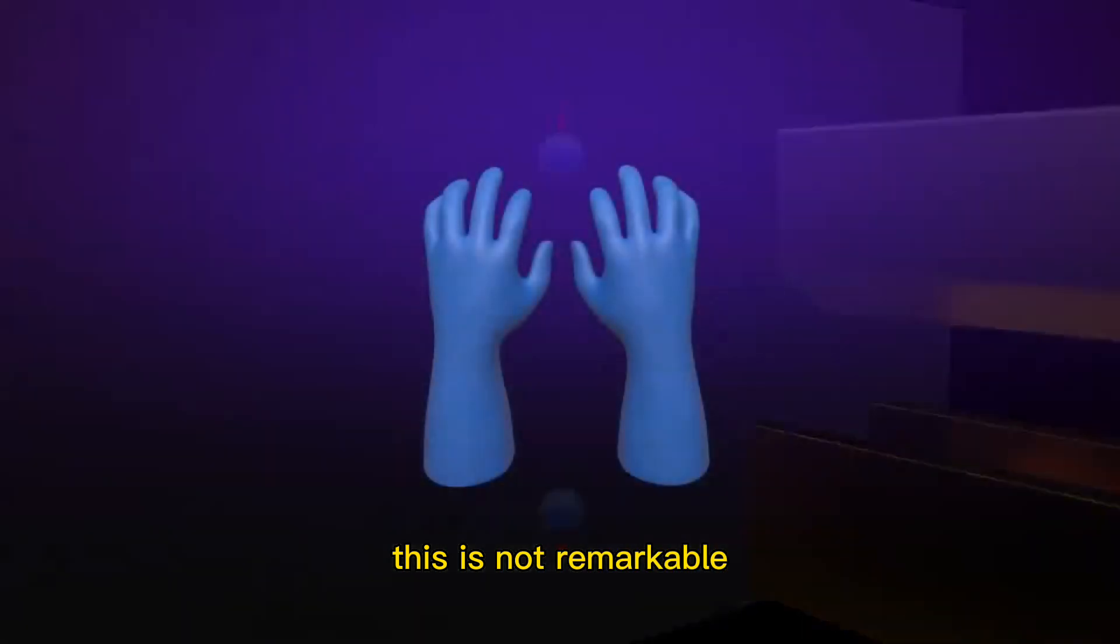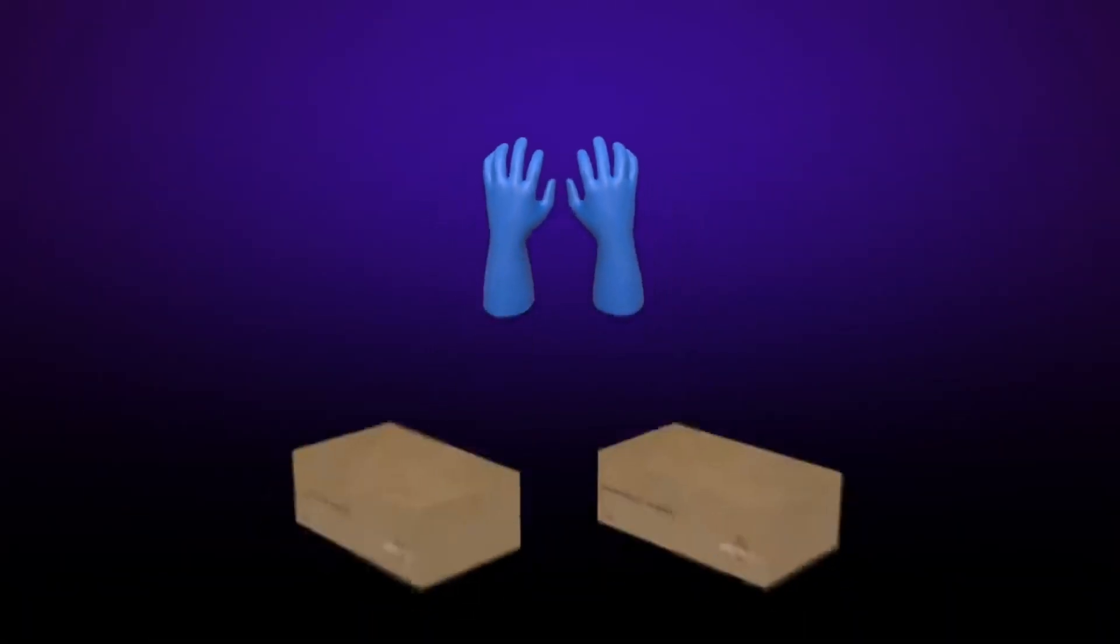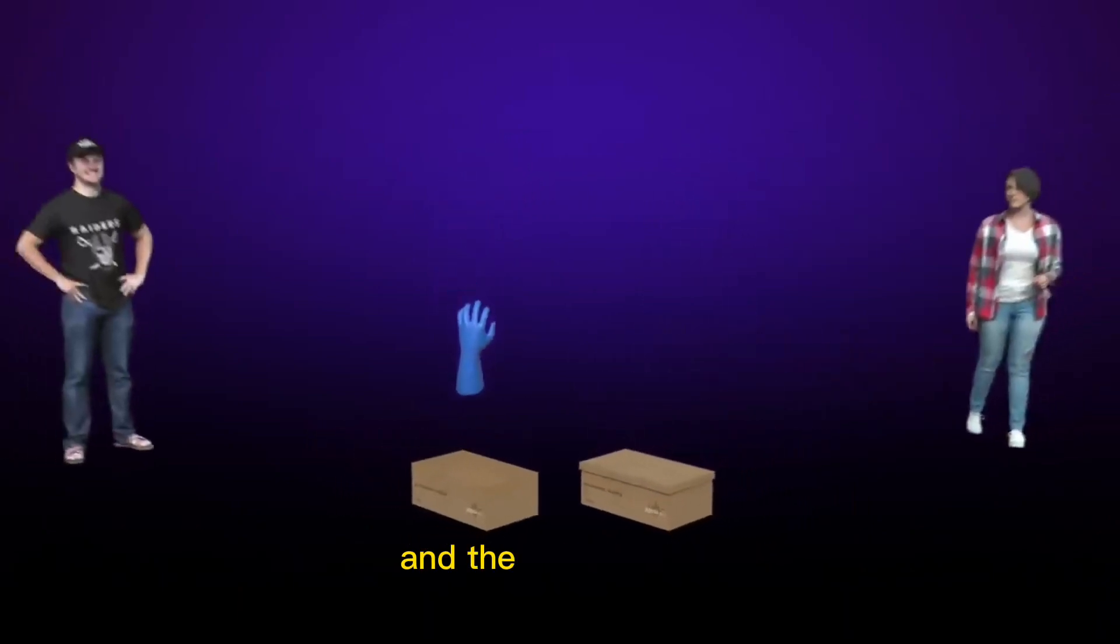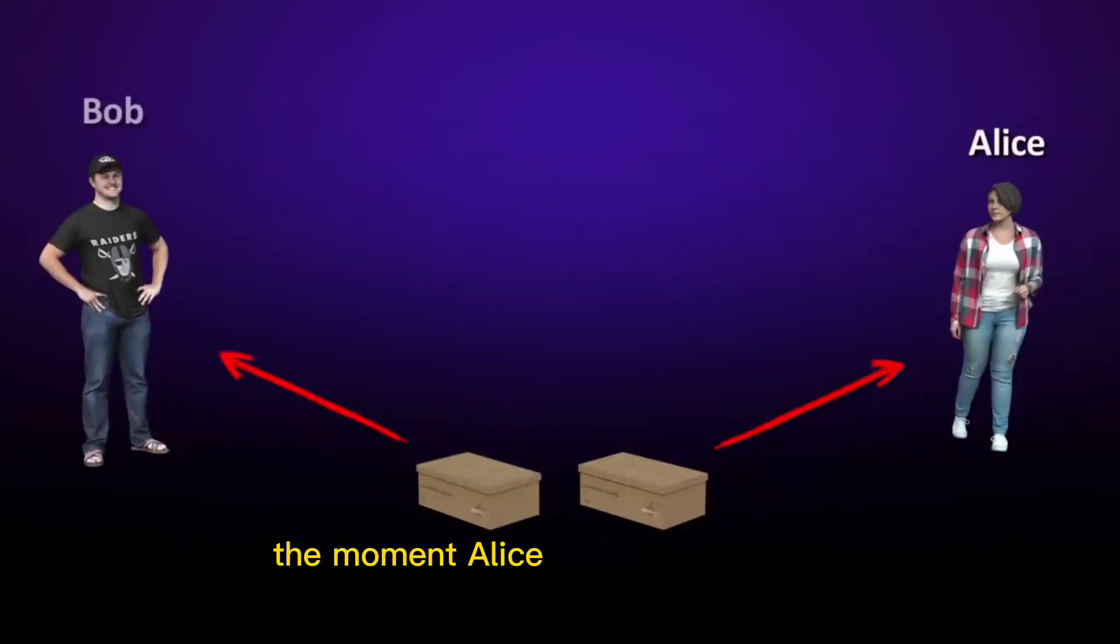This is not remarkable, because we could do the same thing with the gloves. We could put one in a package and send it to Alice, and the other to Bob. The moment Alice opens her package and finds the right hand glove, she knows Bob must have the left hand glove. The handedness of the gloves, like the spins of the electrons, is correlated.